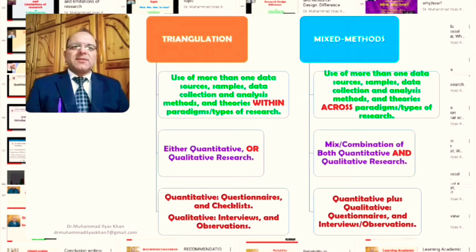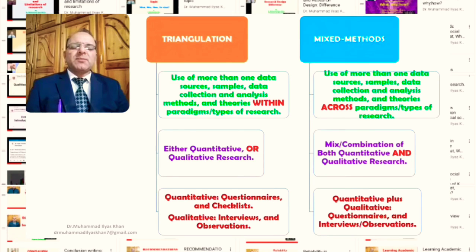To summarize, triangulation and mixed methods research have certain similarities, mainly because of the use of more than one data sources, samples, data collection and analysis methods, and theories. But the main difference is that triangulation is applied within paradigms — that is, either within a quantitative or qualitative research paradigm — while in mixed methods, we go across paradigms and mix quantitative and qualitative data.